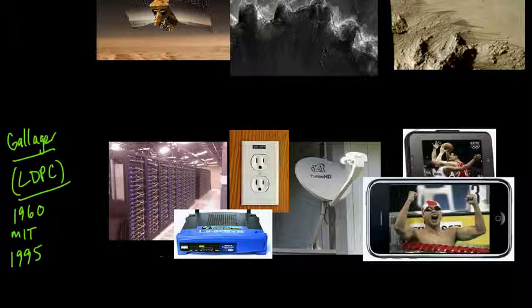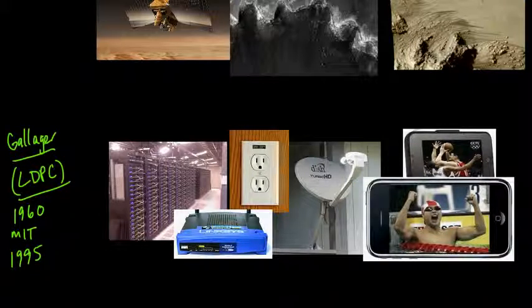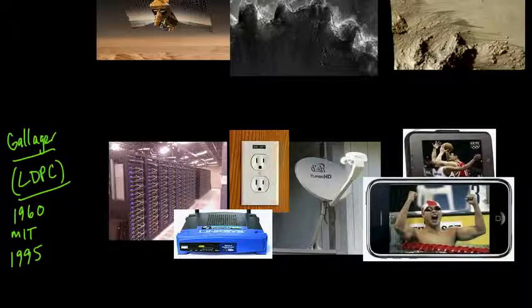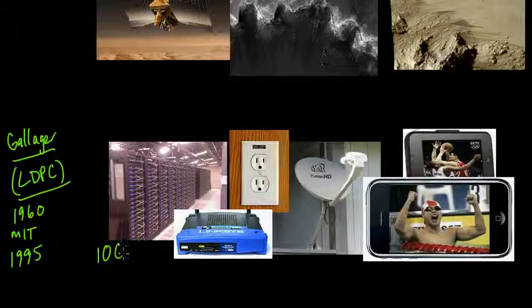Low density parity check codes and turbo codes are at the forefront, the state of the art of error correcting codes. They can come very very close to the optimal limit of what you can possibly do with an error correcting code, and they can do it computationally efficiently. Applications of these Gallager codes include very high speed ethernet — for example, 10 gigabit per second ethernet uses Gallager codes, used in server farm applications like Facebook's server farms.